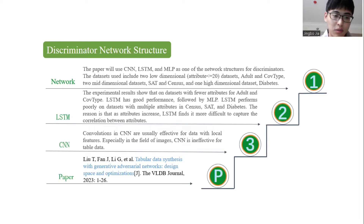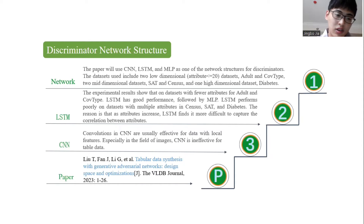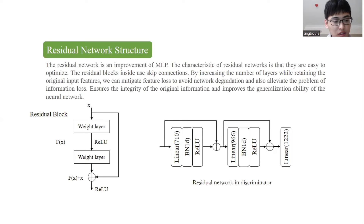LSTM performed poorly on datasets with many attributes. The reason is that with more attributes, LSTM finds it more difficult to capture the correlation between attributes. Convolutions in CNN are usually effective for data with local spatial structure, originally applied in the field of images. CNN is also found to be effective for tabular data.